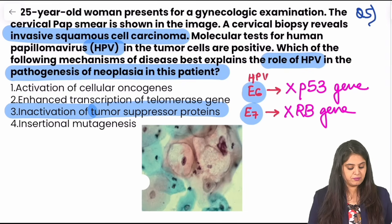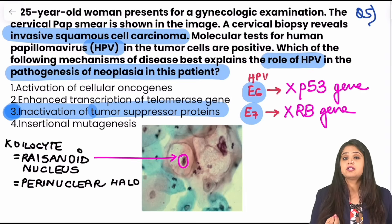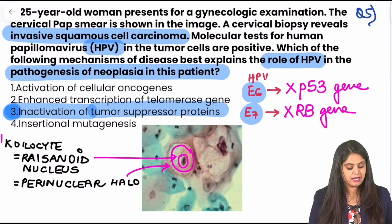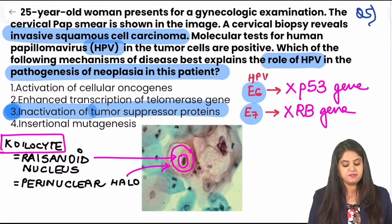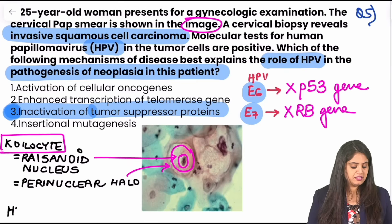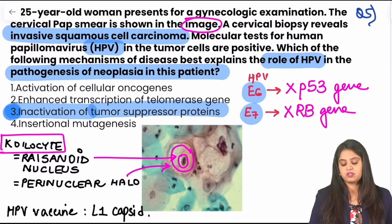The image given with this question represents a koilocyte. A koilocyte has a very dark nucleus — raisin-like, a raisinoid nucleus — and around it you can see a whitish area known as perinuclear halo. That is the characteristic cell for HPV. Also note: for the HPV vaccine, this question has come at least four times in previous years. For vaccine production, we use the L1 capsid protein of HPV.